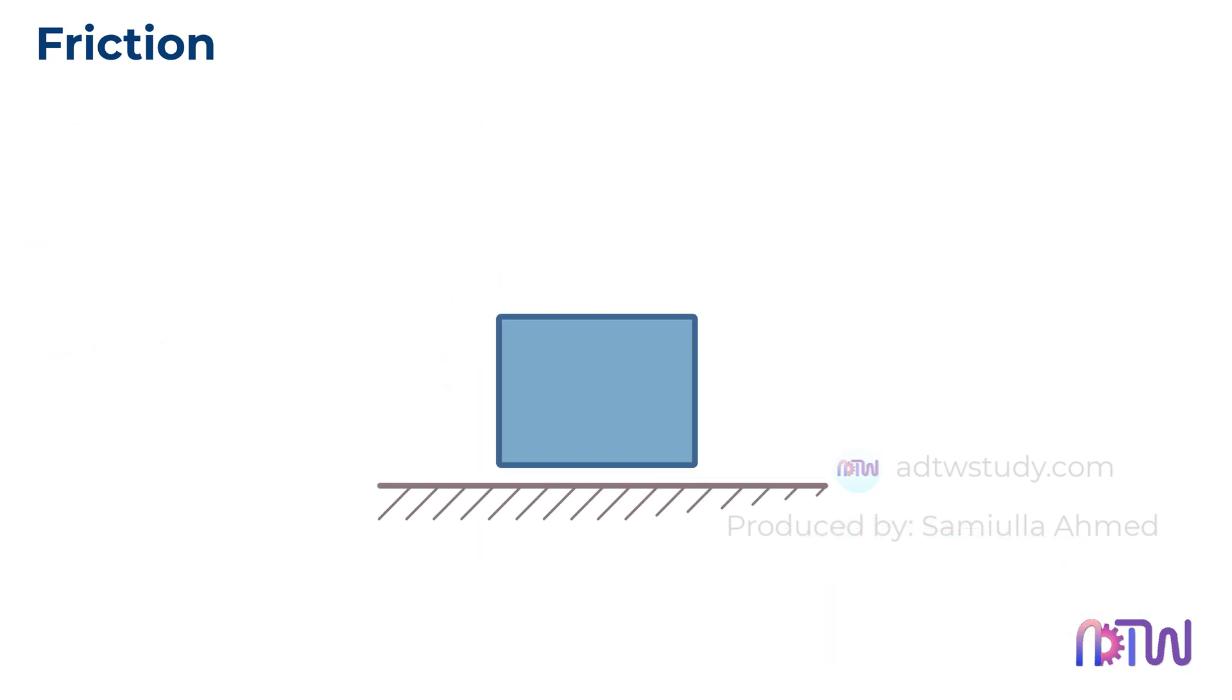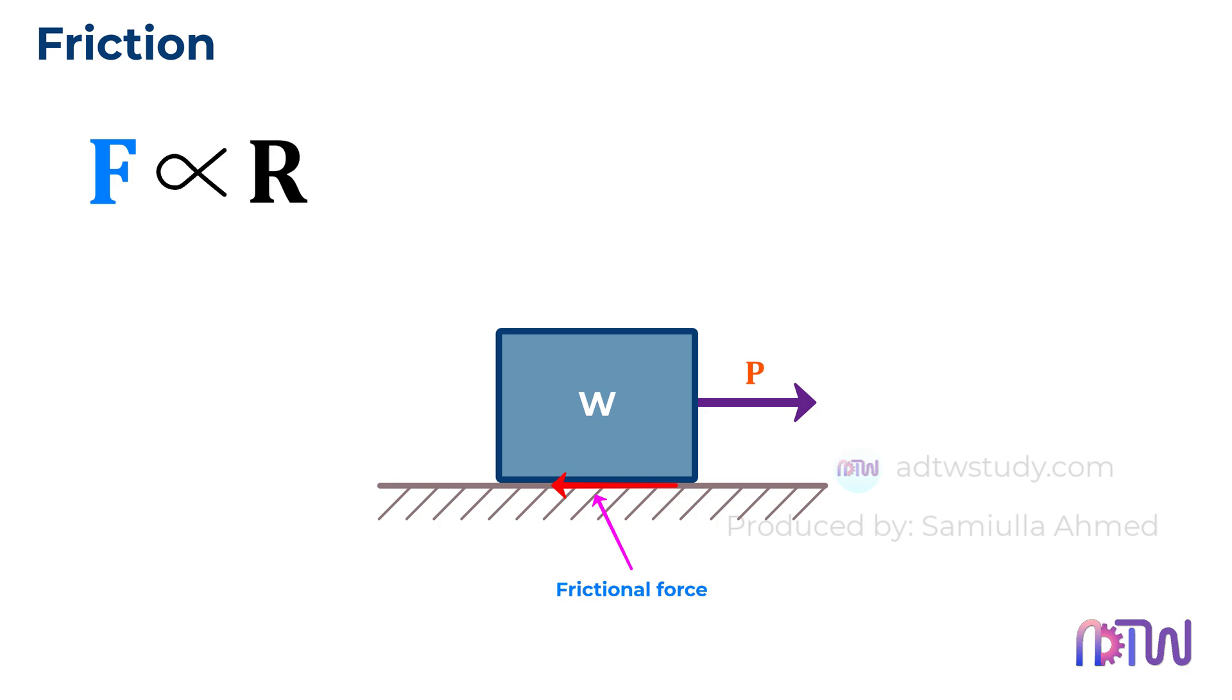Suppose we have a block with a certain weight resting on a flat surface. We want to find the force required to pull the box. To move the box, we need to apply a force equal to or greater than the frictional force between the box and the surface. The frictional force is directly proportional to the normal reaction force acting on the object, given by F equals mu times R, where mu is the coefficient of friction.